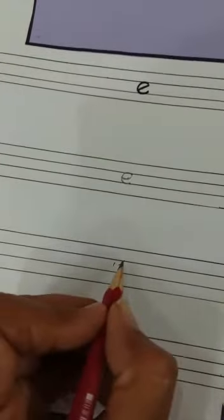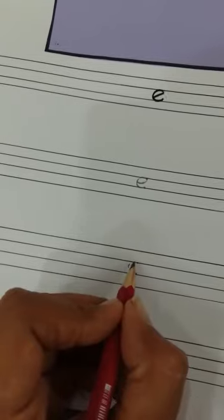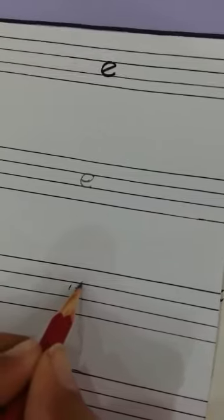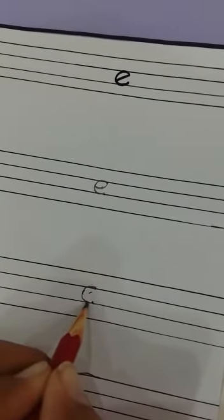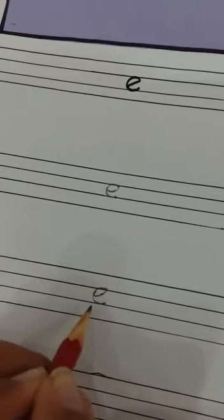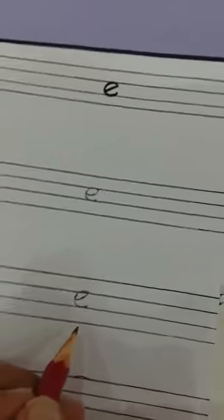Now small e. In the middle, draw a curve touching the bottom. Then make a loop. This is small e.